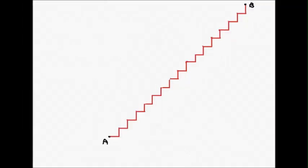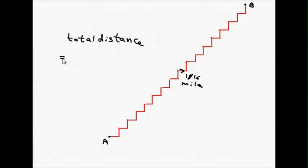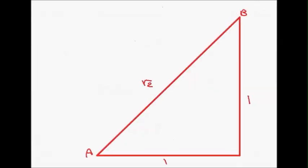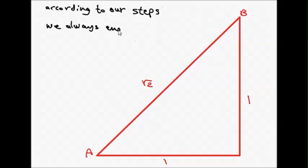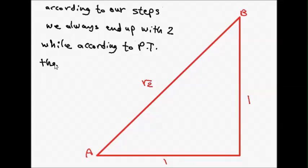In this extreme case, I made 32 little segments of one-sixteenth of a mile each, and the total distance is as usual — 32 times one-sixteenth, which is still two miles. So, according to this repetitive division of segments trying to get to the hypotenuse, the distance is always two miles. But according to Pythagoras' Theorem, the hypotenuse is the square root of two, which is almost 1.4 miles — it's shorter. So my question is: where did the 0.6 miles go? That's the question.